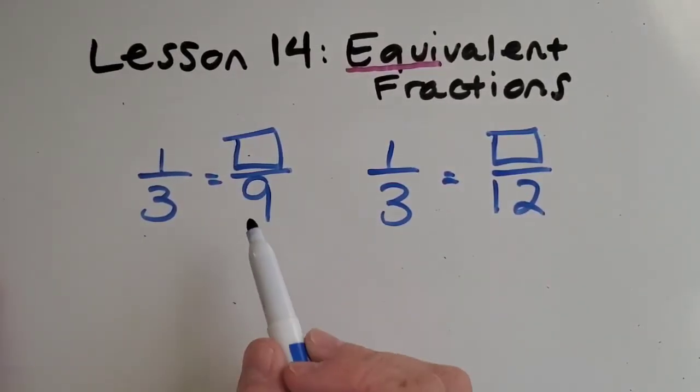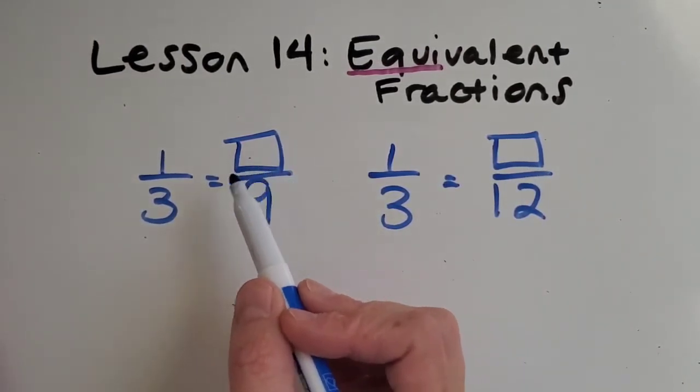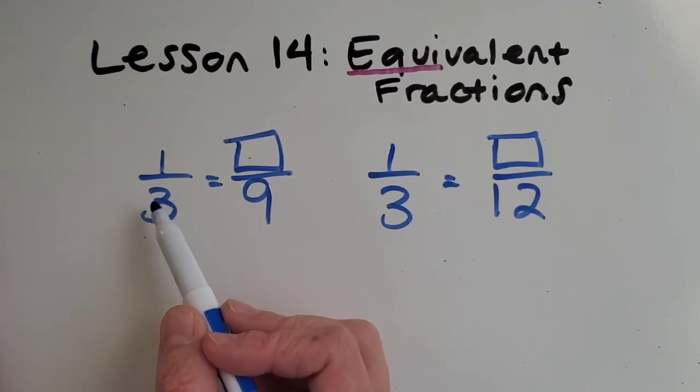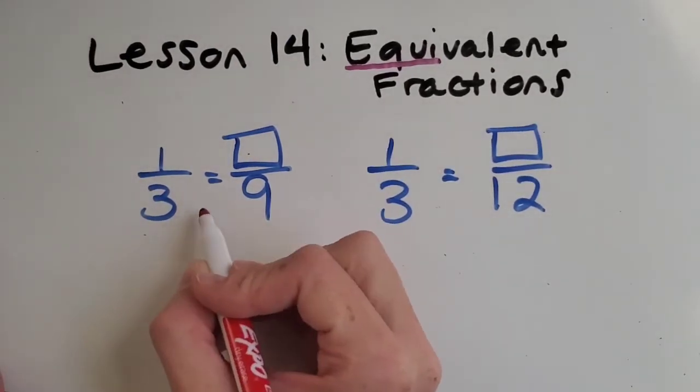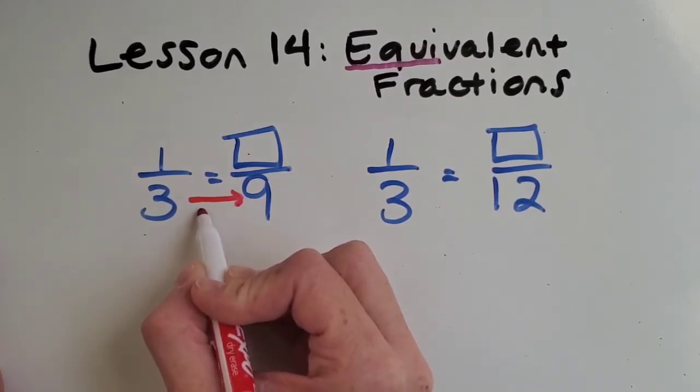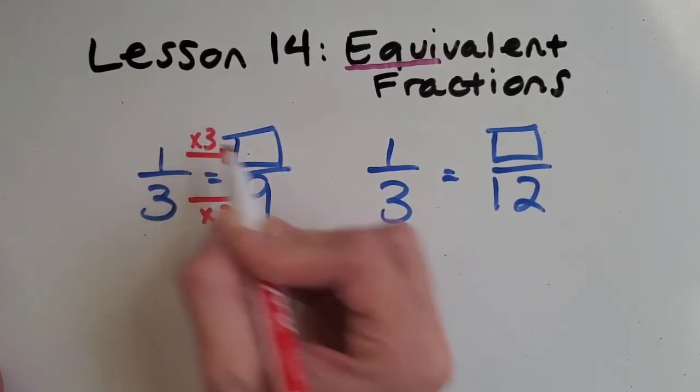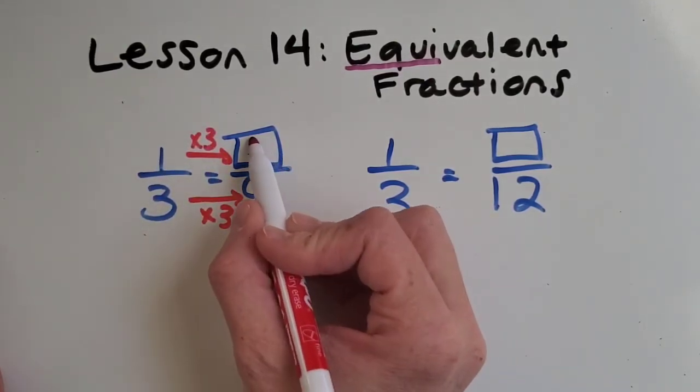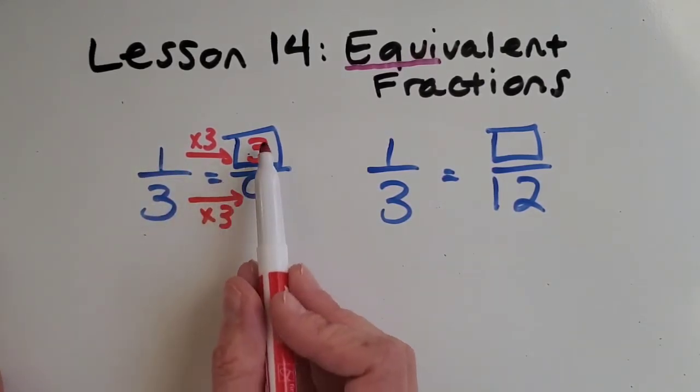Okay, so let's try some new problems where there's a mystery numerator in these two fractions. But we know they're equal to one third. So if we can find the pattern in the denominator, then I think we're going to be okay. Okay, so let's see. Three times what equals nine? Three times three. So let's do that to the numerator. What is one times three? Yay, it's three. So that means one third is equivalent to three ninths.